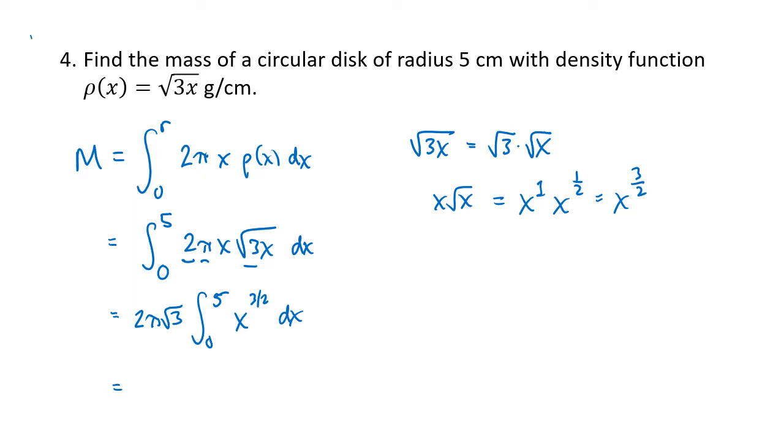And now we can use our power rule. So we add 1 to that power to take the antiderivative. That gives us x to the 5 halves. 1 and a half plus 1 is 2 and a half. We divide by 5 halves, which is the same as multiplying by 2 fifths. And we're going to plug in 5, plug in 0, and subtract. So we get 2 pi times the square root of 3 times 2 fifths times 5 to the 5 halves minus 2 fifths times 0 to the 5 halves. Now 0 to any power is 0, so that goes away. And we can simplify this fraction a little bit.